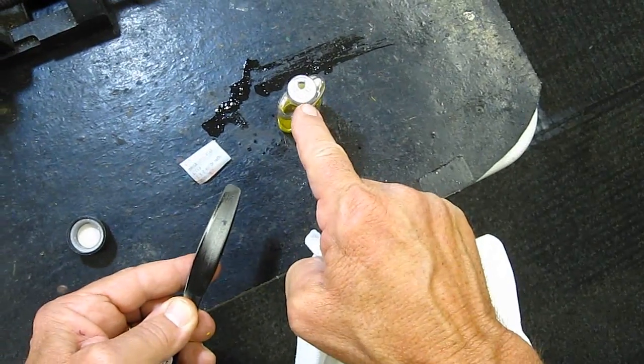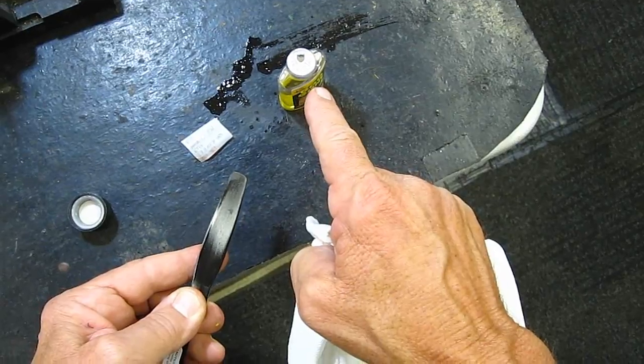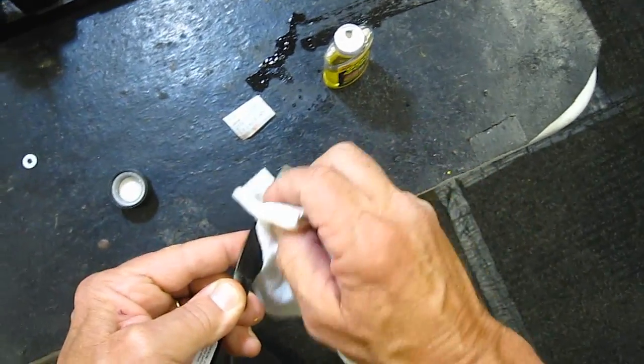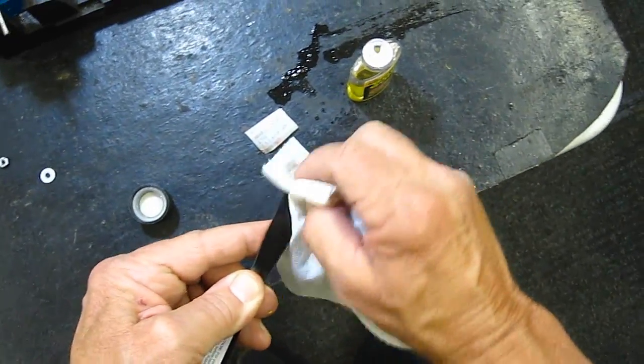By the way, if you put a hole in the top of your Goo Gone bottle like this, that way when you knock it over you won't spill it all at once, which I've learned from experience.